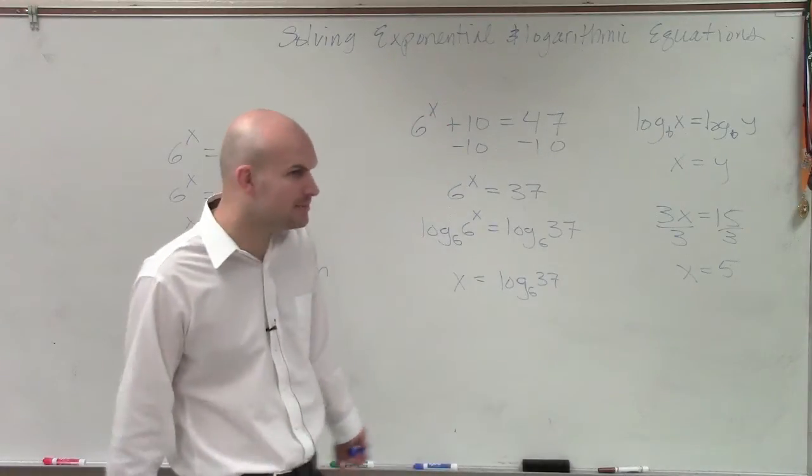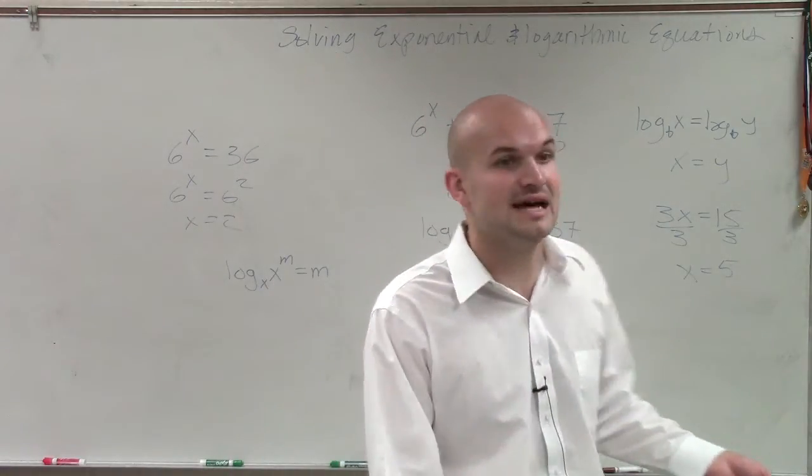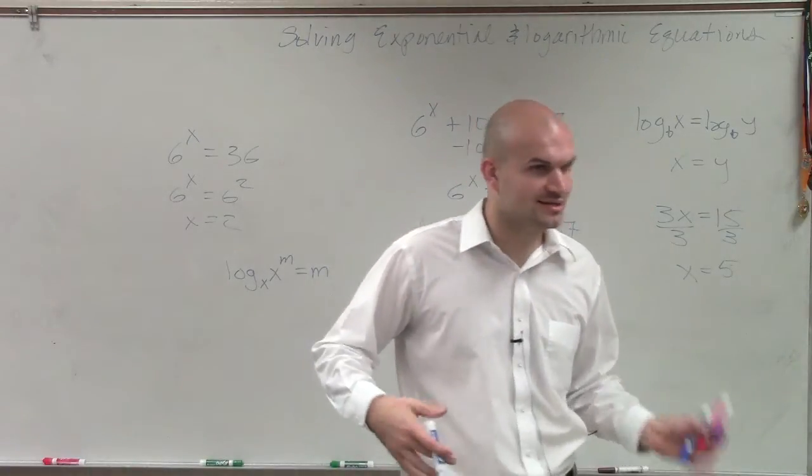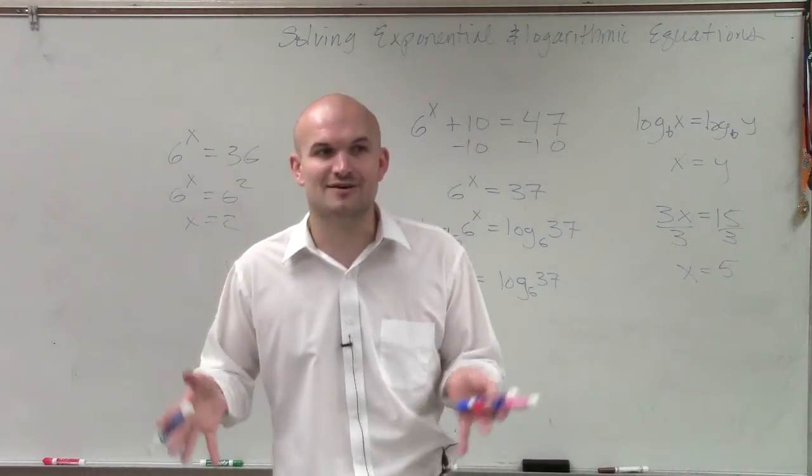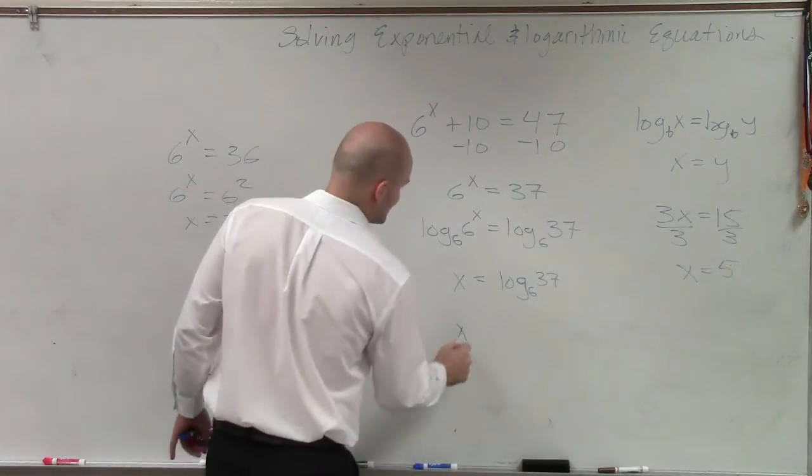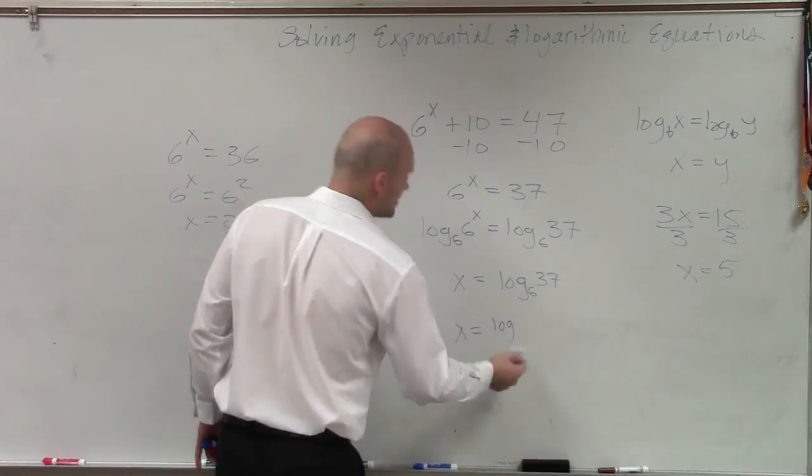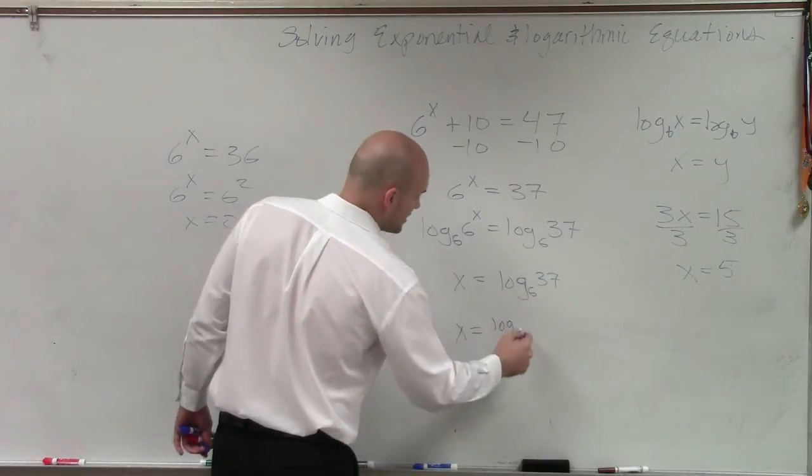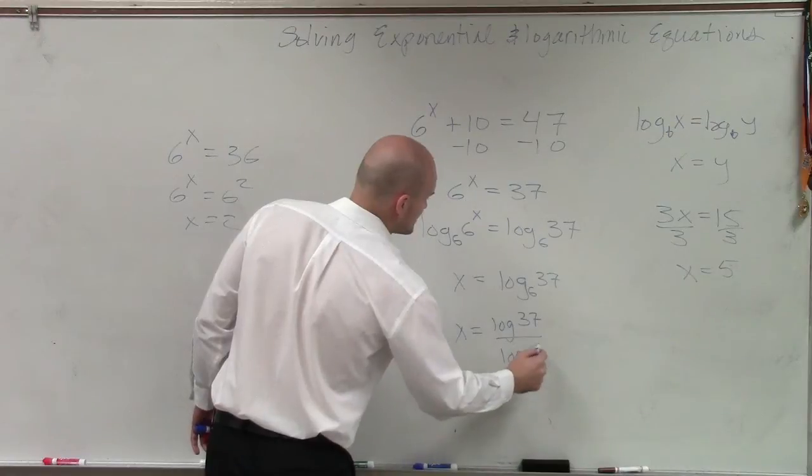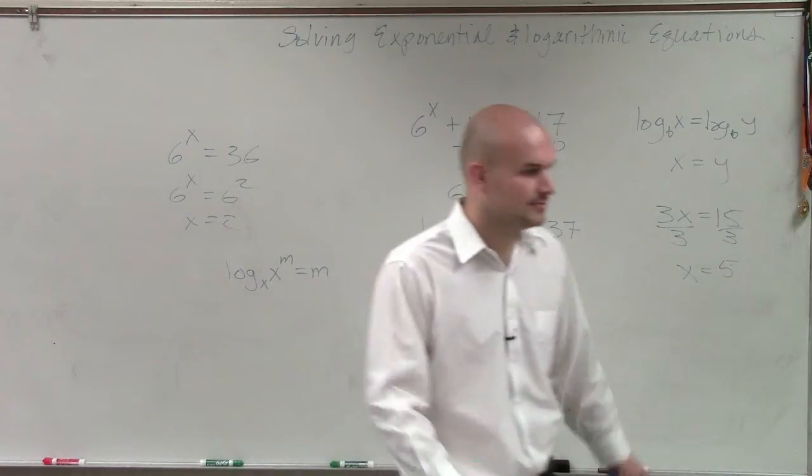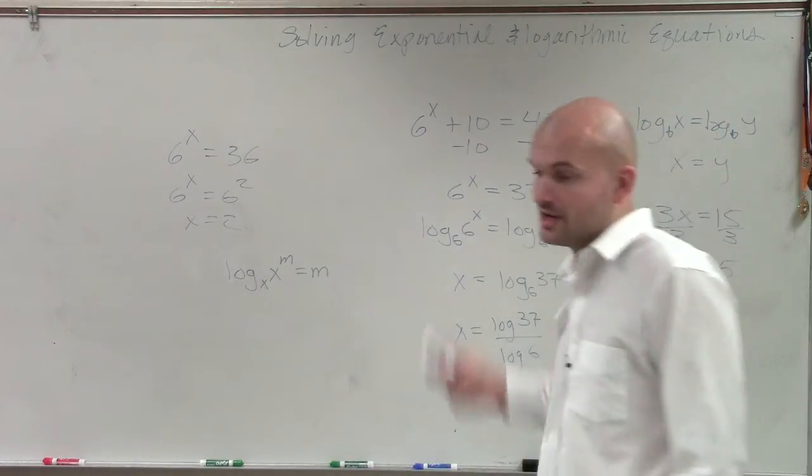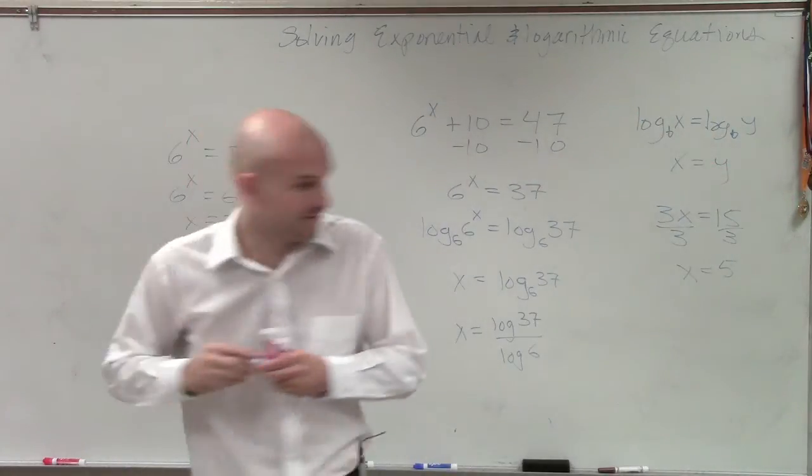Well, now that becomes a problem. Because how are we going to evaluate log base 6 of 37 if we don't have a calculator where we can choose our base? So then we have to use the change of base formula. So therefore, x equals log, I mean, you can do ln or log of 37 over log of 6, assuming you're using base 10. If you don't write in the base with logarithms, you're assuming base 10. And the majority of your calculators are only going to do base 10. So therefore, you can figure that out.